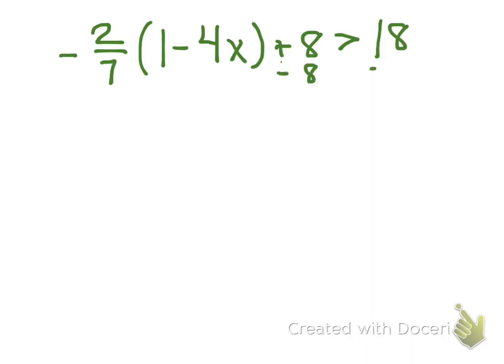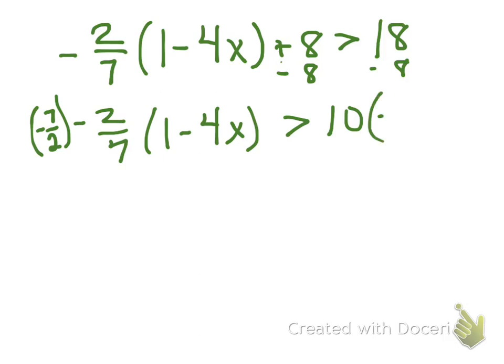So now I have negative two-sevenths times one minus four X. Now we've got negative two-sevenths times this whole thing is greater than ten. So what we can do is get rid of that fraction right off the bat. And we can do that, we know, by multiplying by the reciprocal.